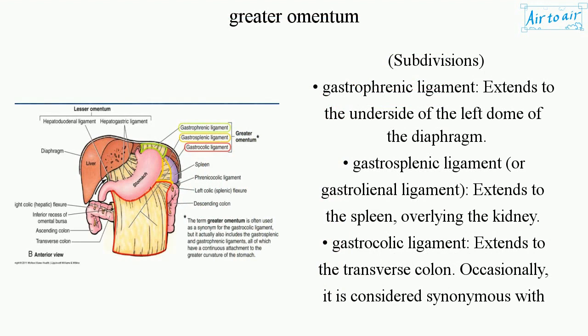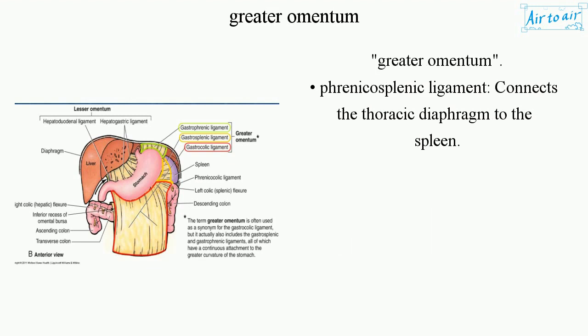Subdivisions: the gastrofrenic ligament extends to the underside of the left dome of the diaphragm; the gastrosplenic ligament (or gastrolinal ligament) extends to the spleen overlying the kidney; the gastrocholic ligament extends to the transverse colon and is occasionally considered synonymous with the greater omentum; the phrenicosplenic ligament connects the thoracic diaphragm to the spleen.